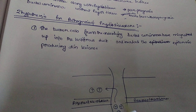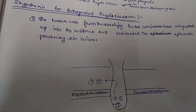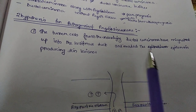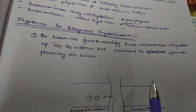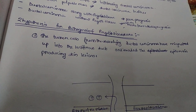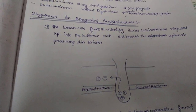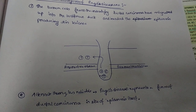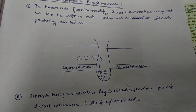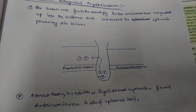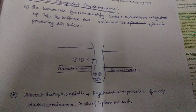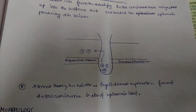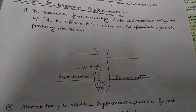The basement membrane is intact and below it is the stroma. The second hypothesis is an alternate theory and is less reliable. It says that Paget's disease itself is a form of ductal carcinoma — specifically, it is a ductal carcinoma in situ of the epidermis itself, with no migration from an underlying ductal carcinoma.